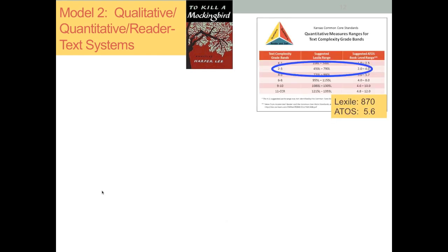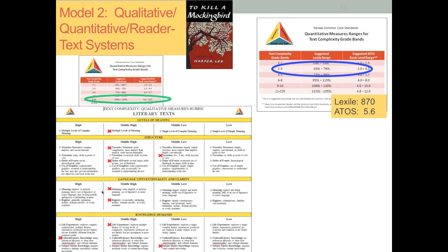We're also seeing a lot of systems being offered right now where we attempt to take the three legs of the text complexity triangle and describe the text through applications of all these systems. We start with a quantitative measure, then have some kind of rating scheme. This rating scheme has some usefulness if that was what was being reported. But as you see, the folks doing this are actually reporting a general grade level.